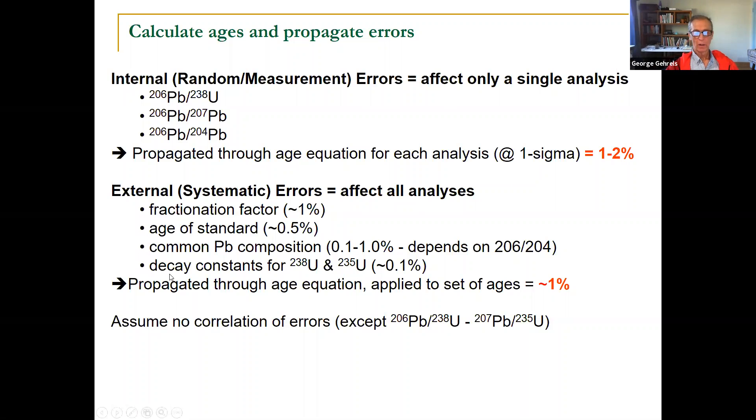If you add up all these different uncertainties, maybe your standard is off. Maybe it's not exactly the age you think it is. Maybe your common lead composition is not quite right. Your fractionation factor is not quite right. All of those external uncertainties might add another 1%. This is one of the challenges in reporting data is to know how to do this. How do you report your data? Just with these or together with those as well. And there is a methods paper that we'll talk about later from 2016 that kind of describes how you do this.